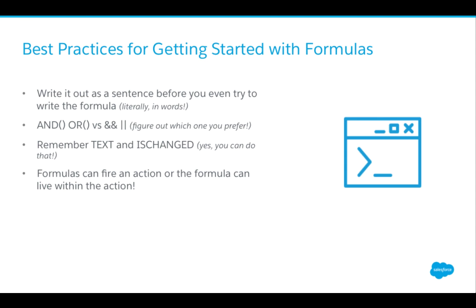Two of my favorite formulas are TEXT and ISCHANGED. TEXT lets us translate a picklist field or a date field to text so we can use it in our formula. ISCHANGED lets us reference whether a field changed from its previous saved value at the time of save — these are two very powerful formulas. We can use formulas in our criteria when we have complicated criteria in a workflow rule, or we can use it in the action itself.